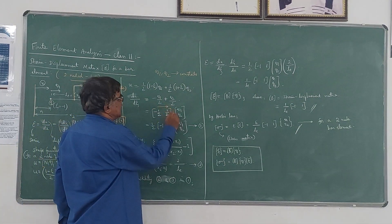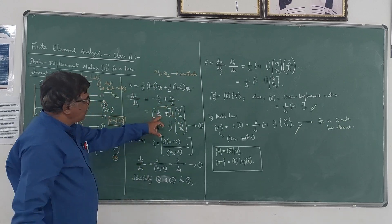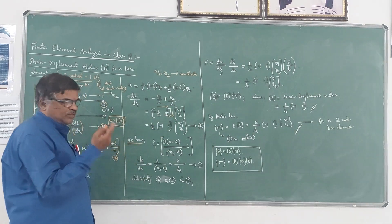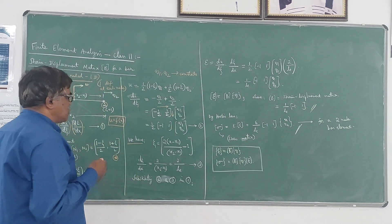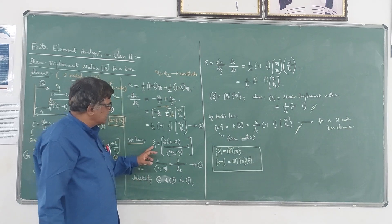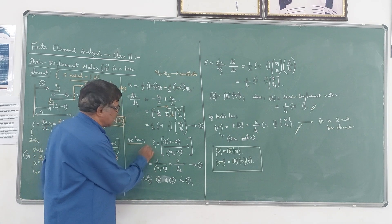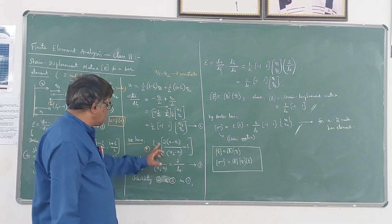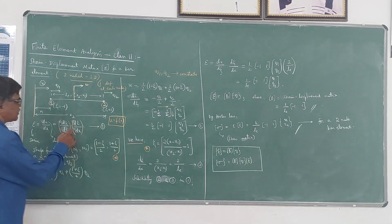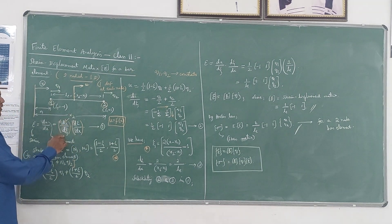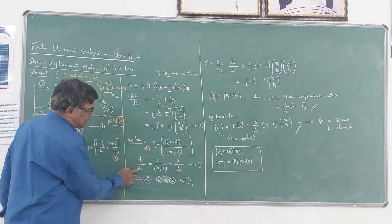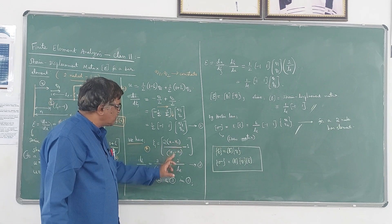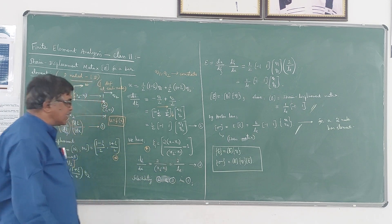This can be written in matrix form as (1/2)[−1  1]{Q1, Q2}ᵀ. We also know the relationship between the natural coordinate and the global coordinate: ζ = 2(x − x1)/(x2 − x1) − 1, where x2 − x1 = Le. Differentiating ζ with respect to x, since x1 and x2 are constants, we get dζ/dx = 2/Le.